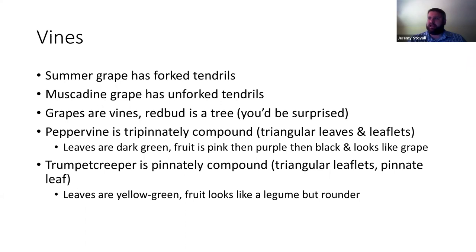Vines: the biggest surprise switching to photo format this spring was people could no longer tell grapevines and redbud apart, which I've never seen happen in the field. If you just get a leaf, it can be hard to tell you have a vine. Look closely to see if it's a vine or a tree. One good clue — if it has tendrils, it's not a tree. Summer grape has forked tendrils; muscadine grape has unforked tendrils. That's the key distinction between them.